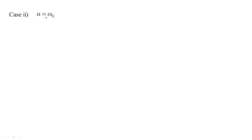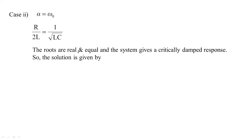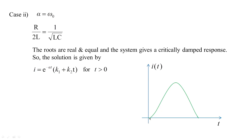Case two: if α = ω₀, then R/(2L) = 1/√(LC). The roots become real and equal and the system gives a critically damped response. The solution is I(t) = e^(−αt)·(k1 + k2·t) for t > 0. This is derived from engineering mathematics under partial differentiation. The waveform rises to a peak and then comes to rest — this is the waveform for transient current under critically damped response.